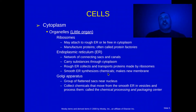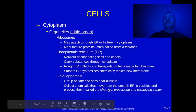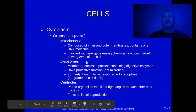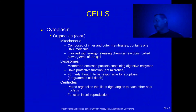The Golgi apparatus is a chemical processing and packaging center. Mitochondria is the power plant of the cell — that's where all the cell's energy comes from.